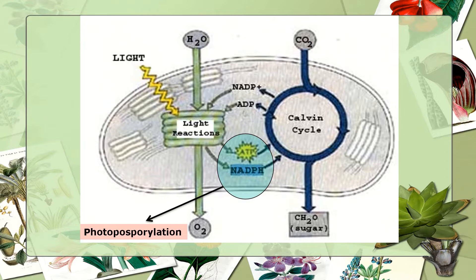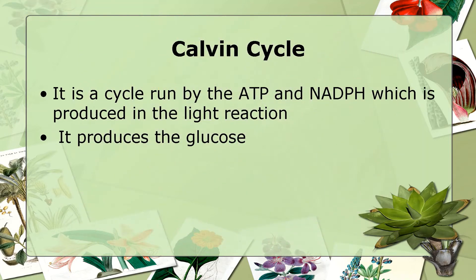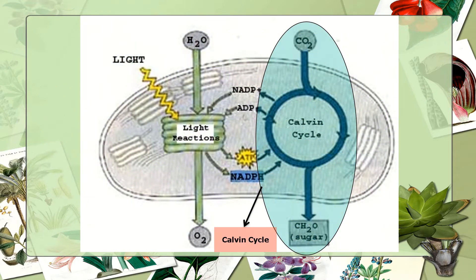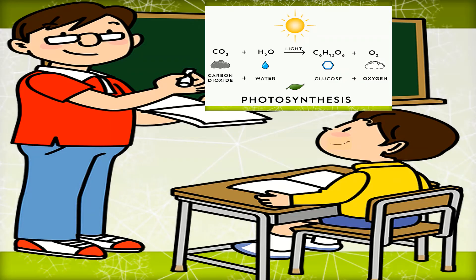Photophosphorylation produces ATP or energy and NADPH, which is an electron carrier. The Calvin cycle, or dark phase, is run by ATP and NADPH produced in the light reaction, and it produces glucose. The Calvin cycle produces C6H12O6, or the unit of glucose. So the whole reaction for photosynthesis needs carbon dioxide, water molecule, and the help of sunlight, to yield glucose plus oxygen.